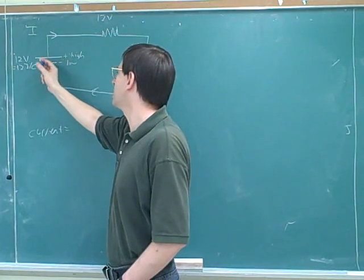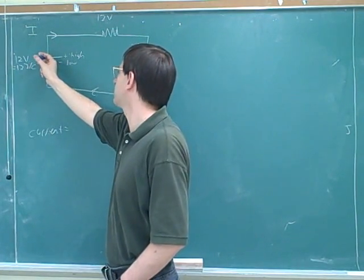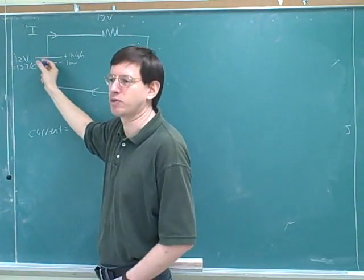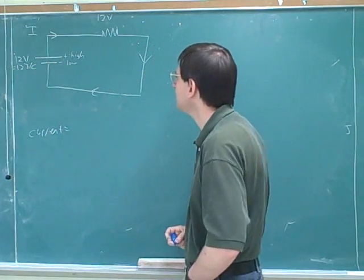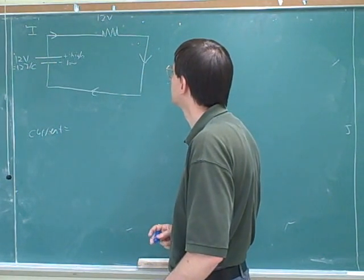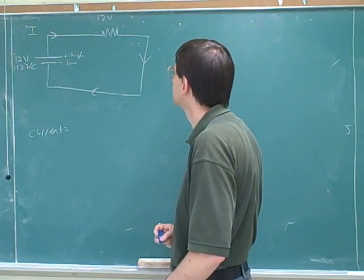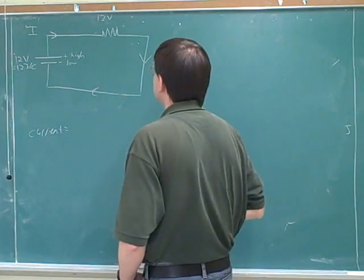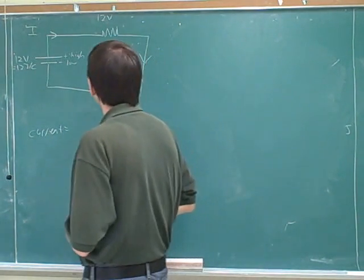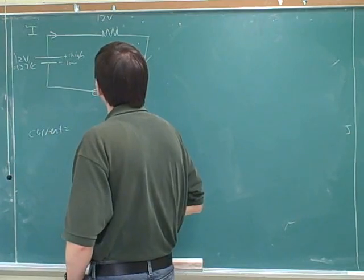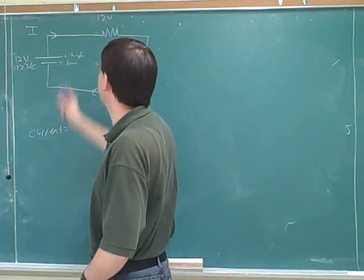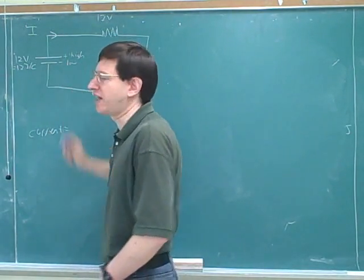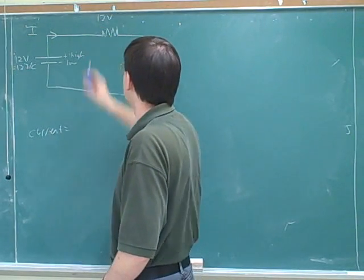That makes sense. If you start here and you gain 12 units of height, then you'll have to lose 12 units of height to come back to where you started. Because our height isn't changing on the other parts of the circuit — in our analogy, those are flat. So this would be a 12-volt drop.